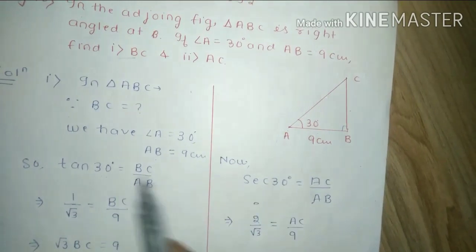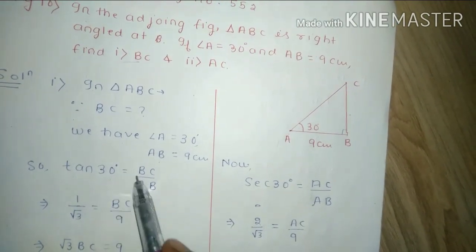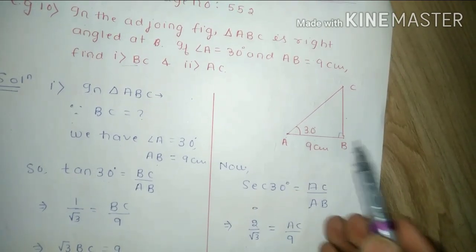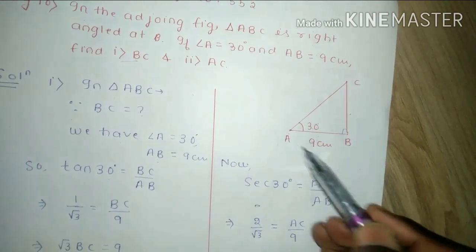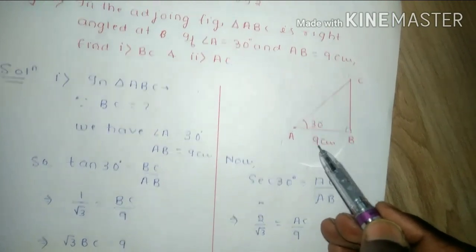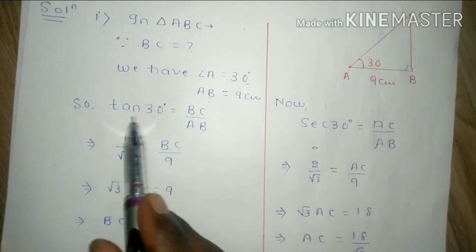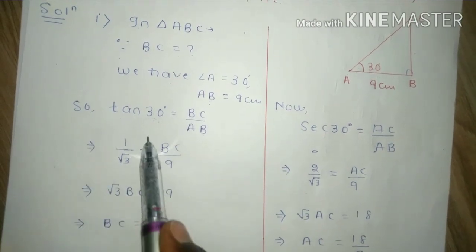Tan theta is equal to tan 30 degrees. We have this one, you will know how to take tan for example if you look at the table we will see a trigonometric table.